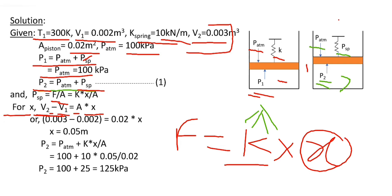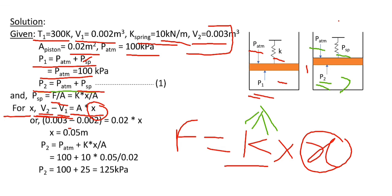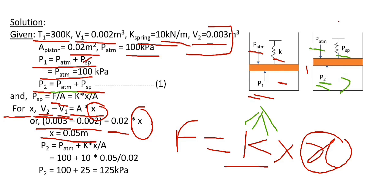To find the value of X, we use the change in volume: V2 minus V1 equals the area of the piston multiplied by X. Here V2 equals 0.03, V1 equals 0.02, and the area equals 0.02, so from this we get the value of X equal to 0.05 meter. From equation one, P2 equals atmospheric pressure plus spring pressure, which is K times X divided by area.